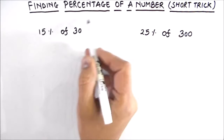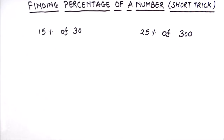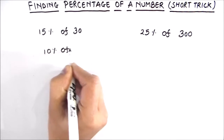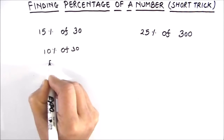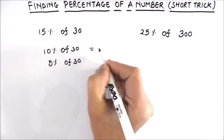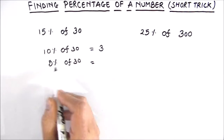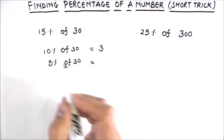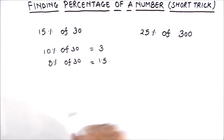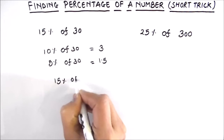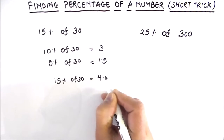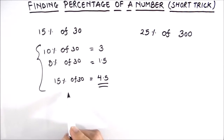Now let's calculate percentage using a short trick. For making the calculation easy, we can write 15 percent as 10 percent of 30 plus 5 percent of 30. We can calculate 10 percent of 30 orally — it is 3. And 5 percent of 30 is half of 3, which is 1.5. So 15 percent of 30 will be 3 plus 1.5, which is 4.5. This is the short trick through which you can calculate percentages easily.